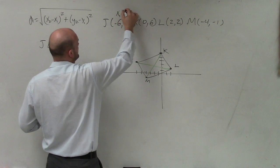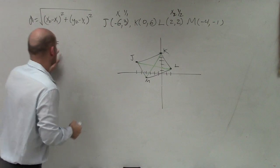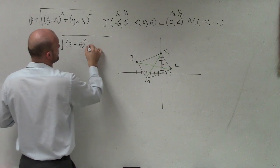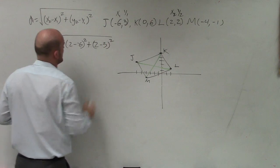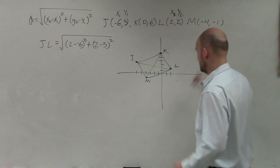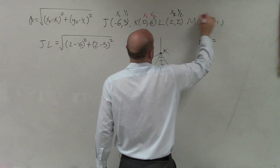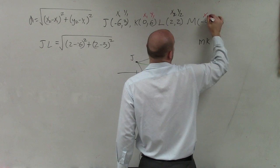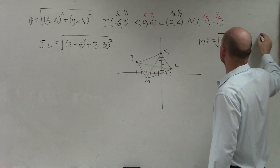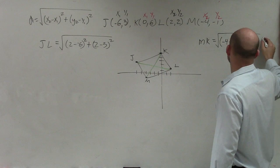So I take J and say that's going to be x₁, y₁, and then I have L as x₂, y₂. So x₂ is 2 minus negative 6, squared, plus y₂ minus y₁ is 2 minus 3, squared. Then I need to determine MK, and I'll do that in another color — same formula, same thing: the square root of (x₂ minus x₁) squared plus (y₂ minus y₁) squared.